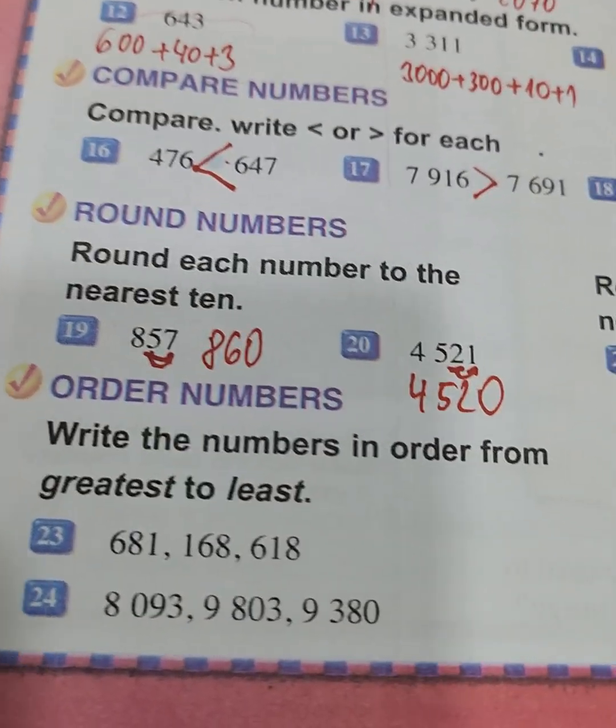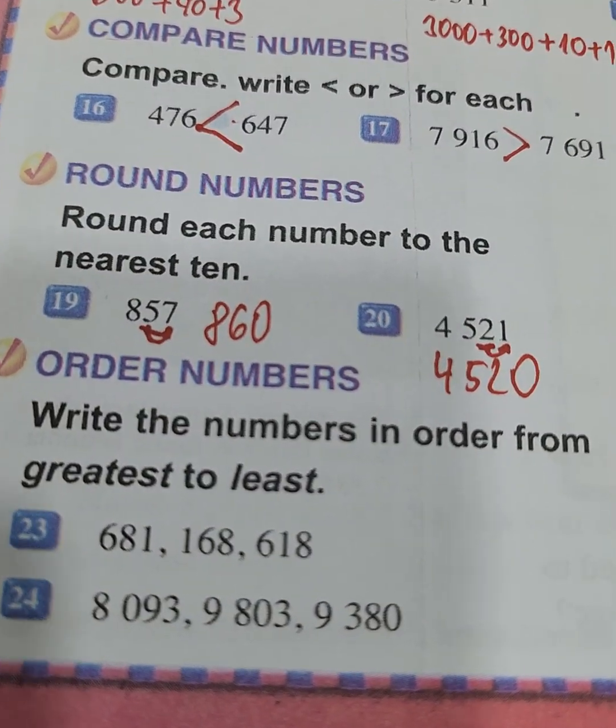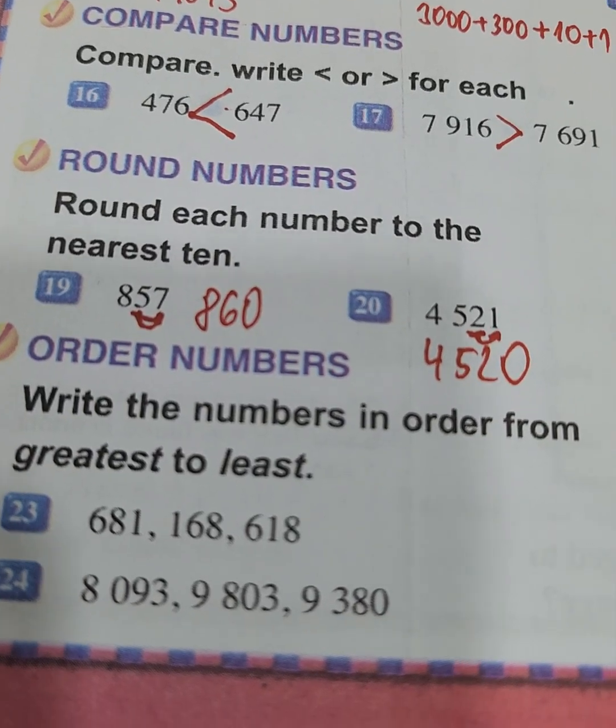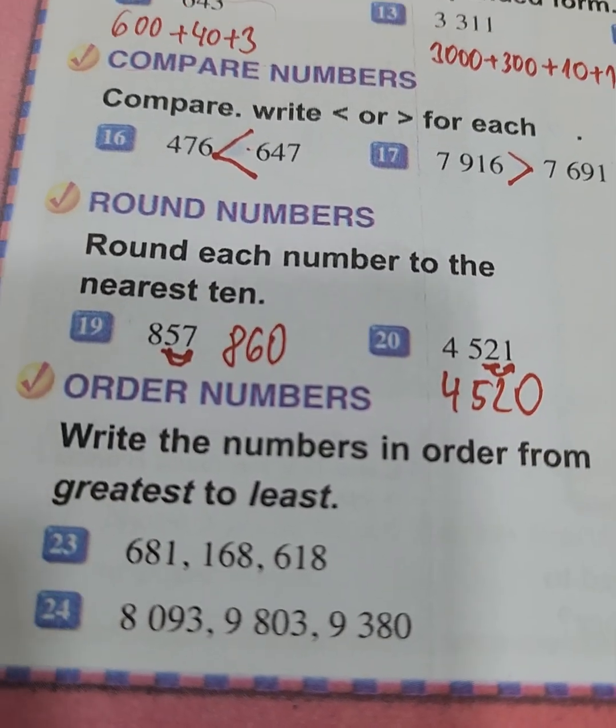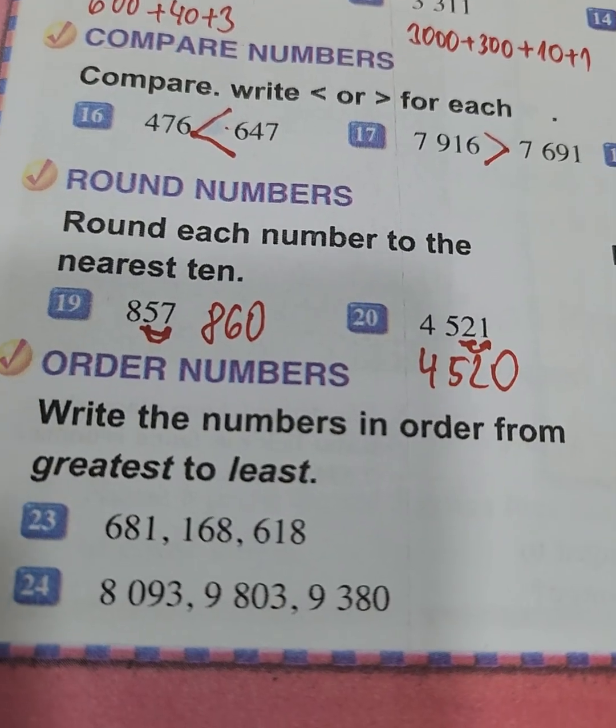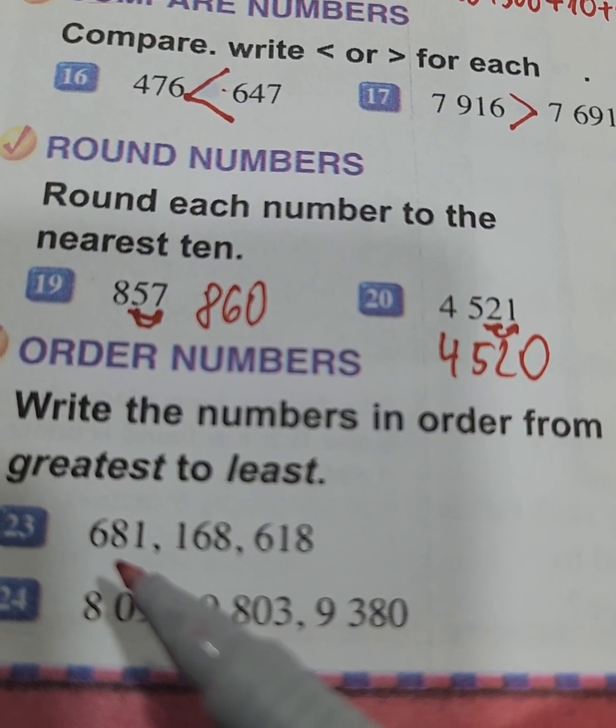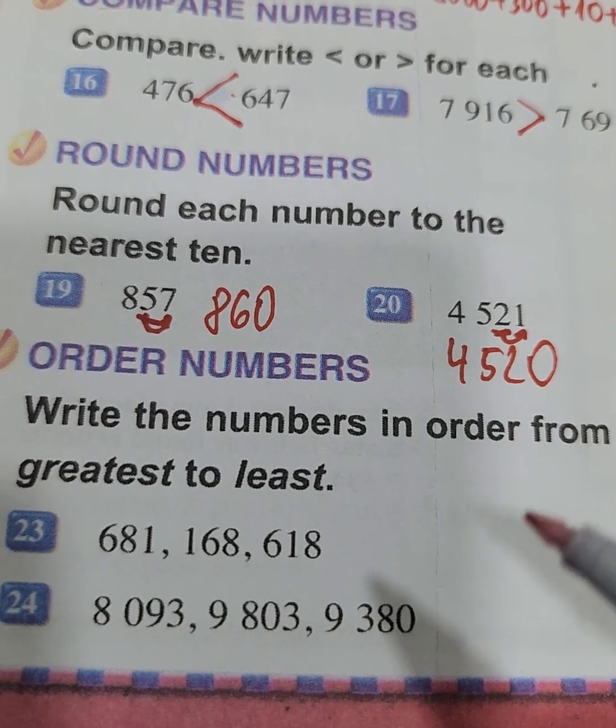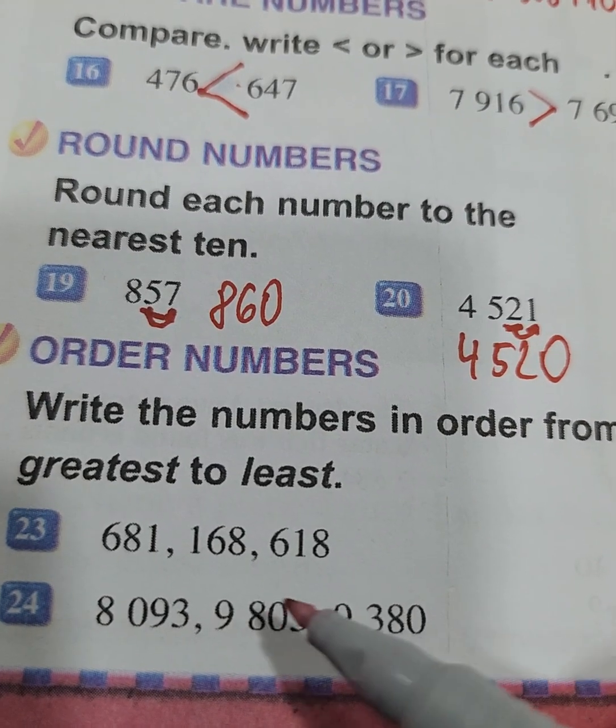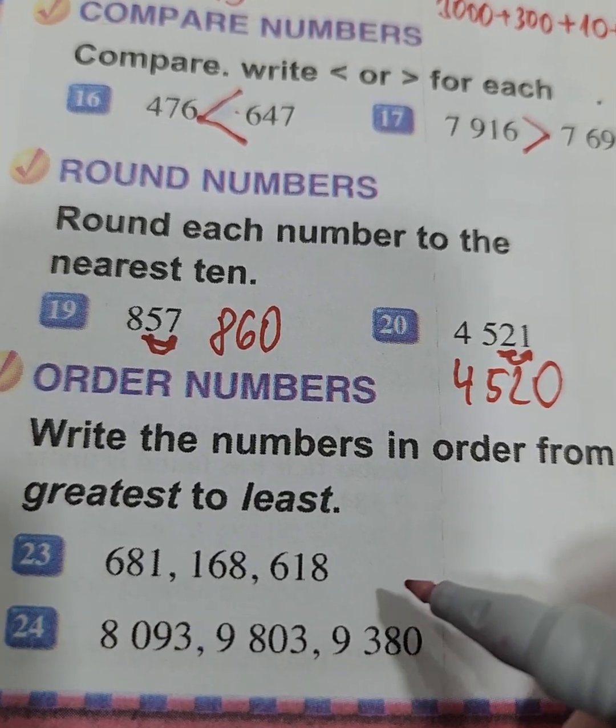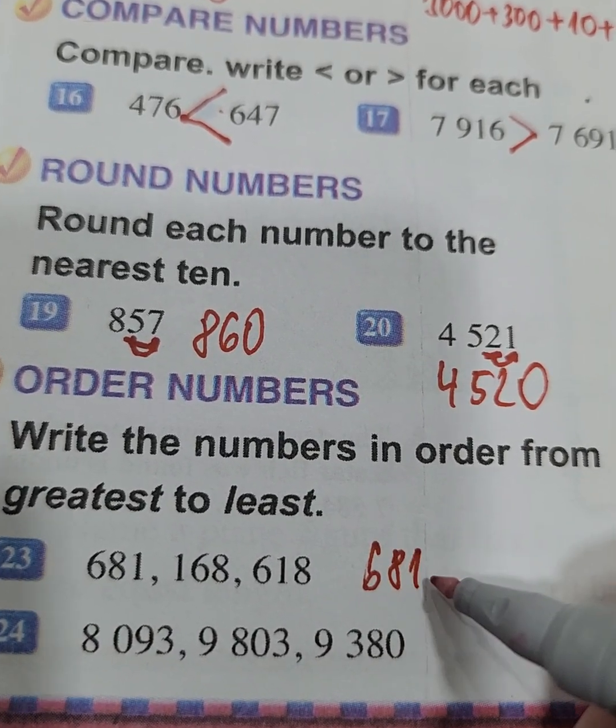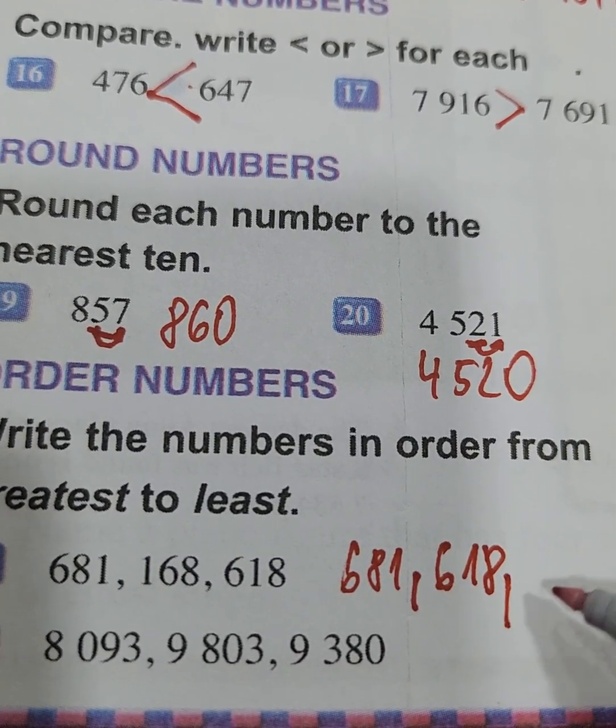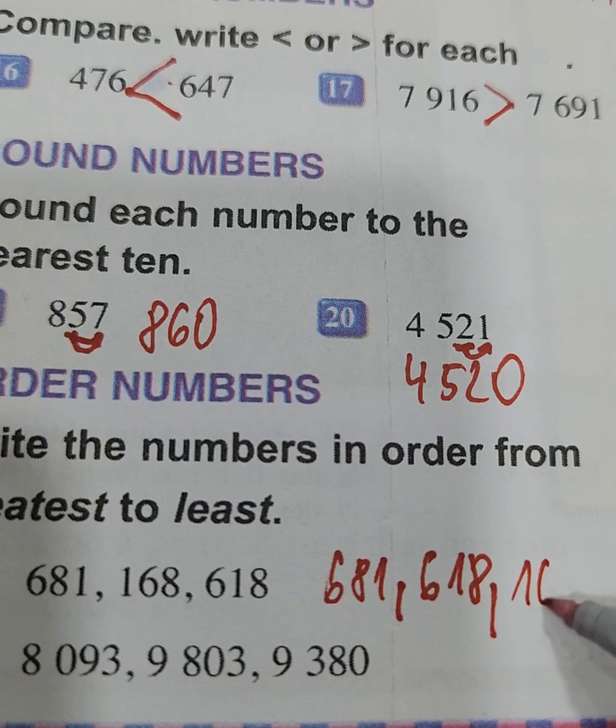The last section, we must order numbers. Write the numbers in order from greatest to least. What does it mean? We will start with the number which is greatest. We have 681, 168, and 618. Which one is the greatest? Greatest is 681. After it comes 618, and after, the least is 168.